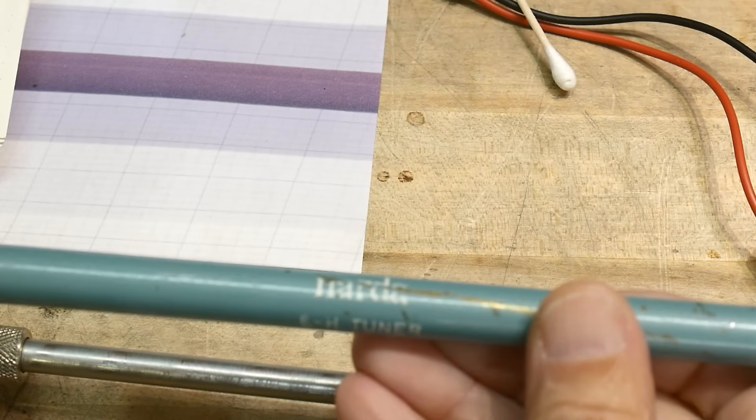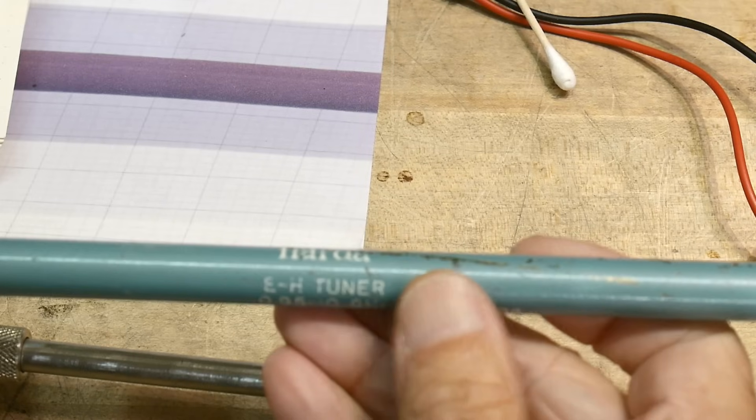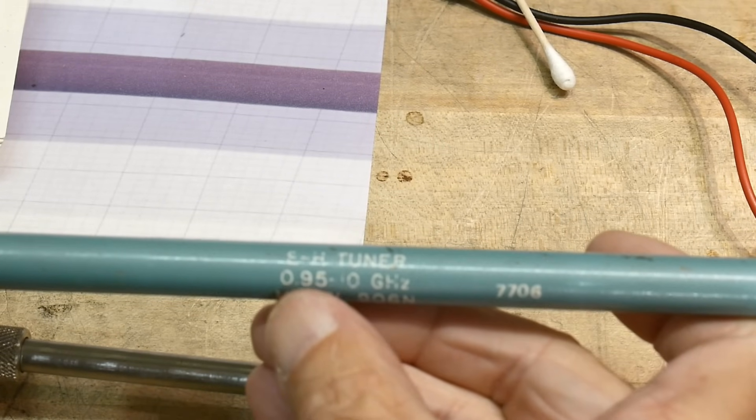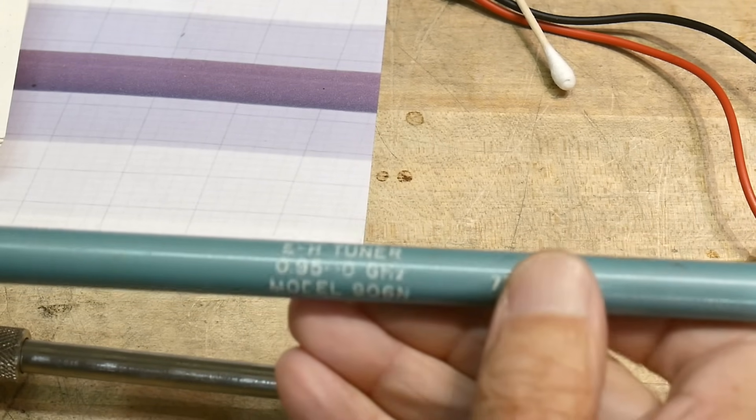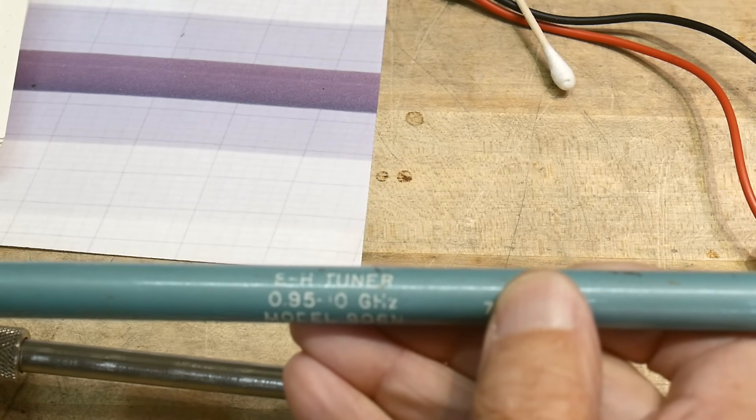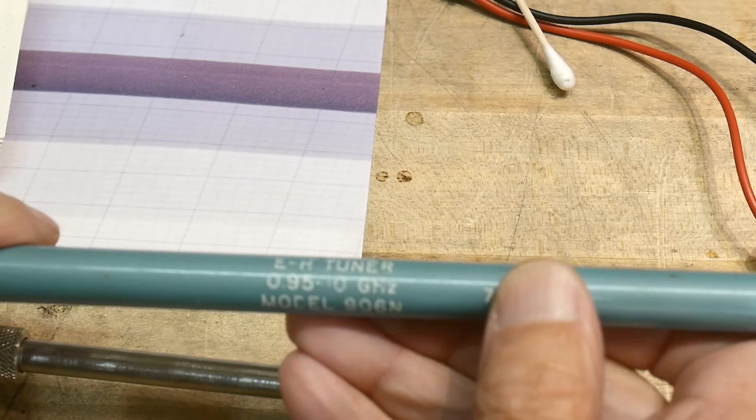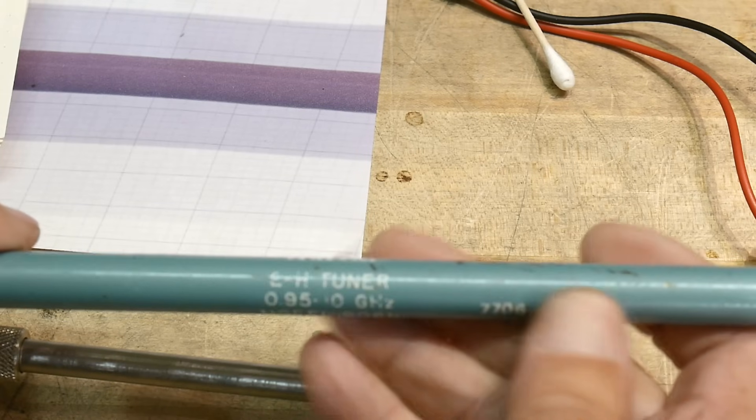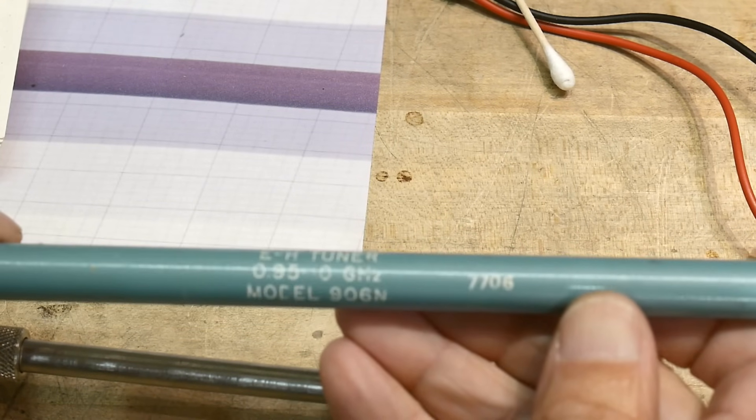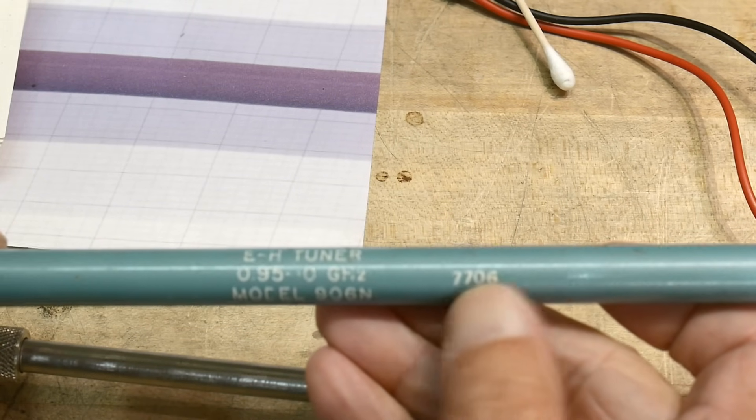All right, I'll show you. This one's a little easier to read. Narda E-H tuner. It is 0.95 to 10 gigahertz. So 1 gigahertz to 10 gigahertz. I have an odd, kind of an odd little device. Made in 1977.